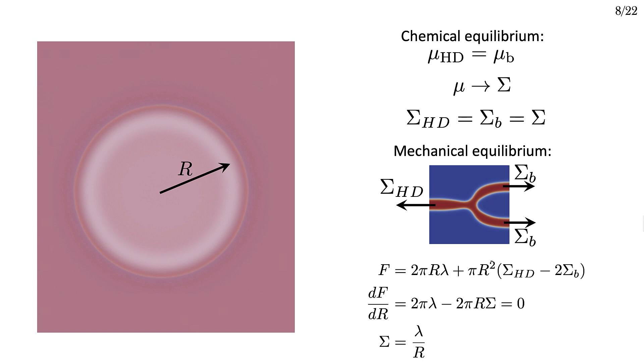And the chemical potential sets the membrane tension. Thus the membrane tension in each portion of the membrane has to be the same. I can write this as sigma HD equals sigma B.